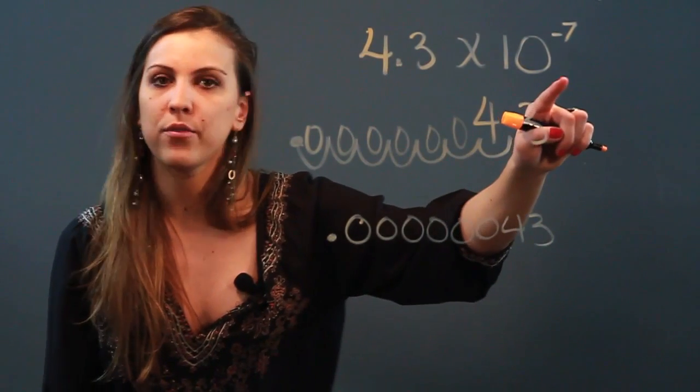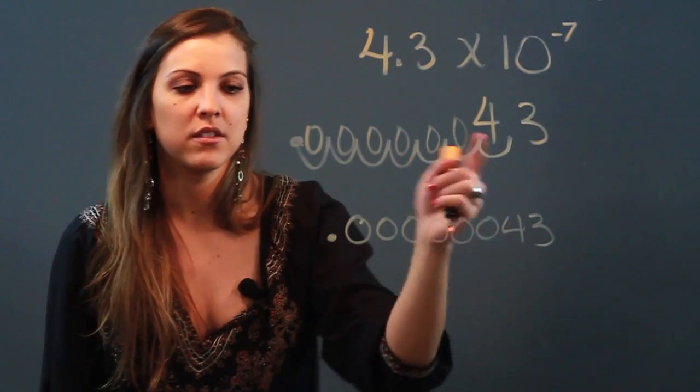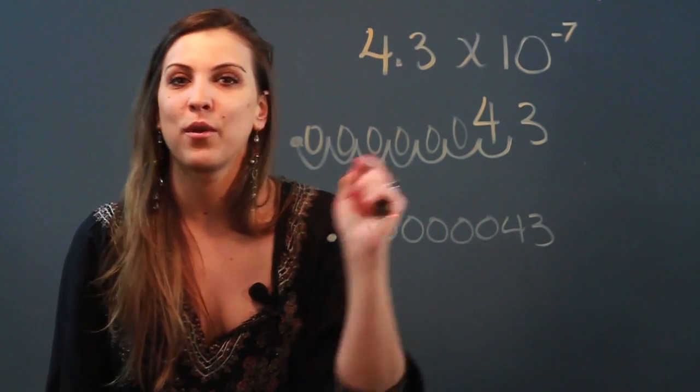And this number 4.3 times 10 to the negative 7th is equivalent to 0.00000043.